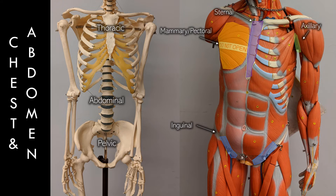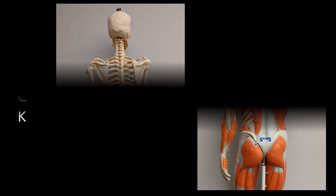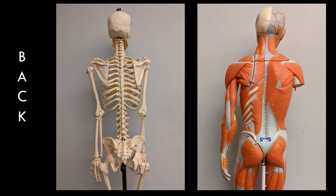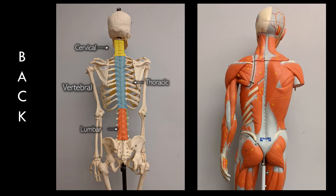On the back is the vertebral region, which can be broken into smaller regions. The neck is the cervical region, then there's the thoracic region, and the lowest part is the lumbar region. Below that is the tailbone area, which is the sacral region. On the muscular model we can see the gluteal region — most people know that the glutes refer to the butt muscles. The coxal region is specifically related to the hip.